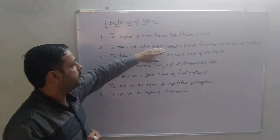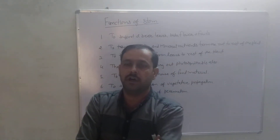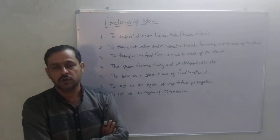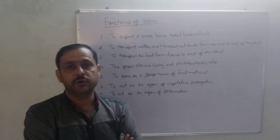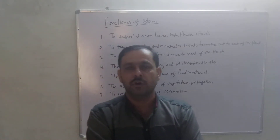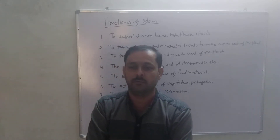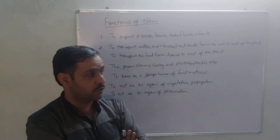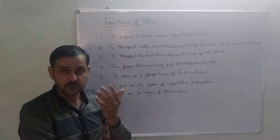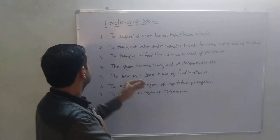Second, to transport water and mineral nutrients from the root to the rest of the plant. As we know, the leaf is the structure which can make food for the plant, so the leaf needs mineral nutrients, and mineral nutrients are absorbed by the root. Root absorbs them, but stem transports water and minerals to the leaf and the rest of the plant where they are needed.